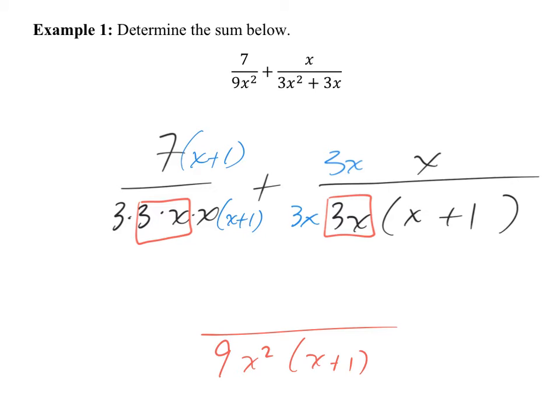Leave it factored because the numerator might have something that could cancel with it. Let's look at the numerator now. What does this become right here please? Take a look. Right here, what is this? 7x plus 7. 7x plus 7. And this is? 3x squared. So it has no common terms, right? So it's 3x squared plus 7x plus 7.